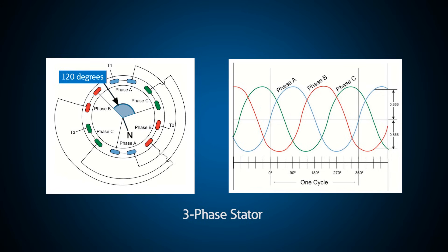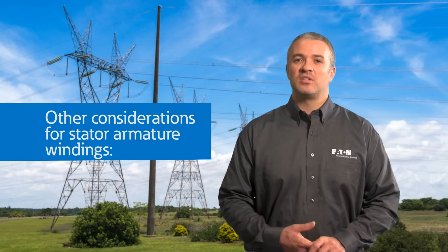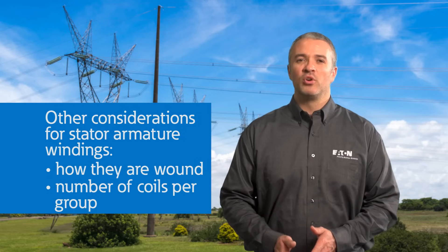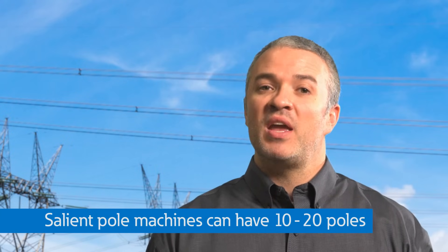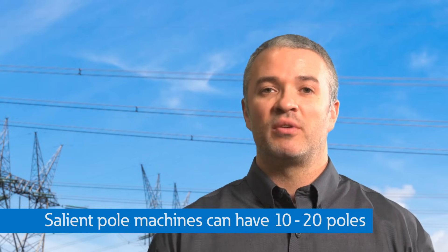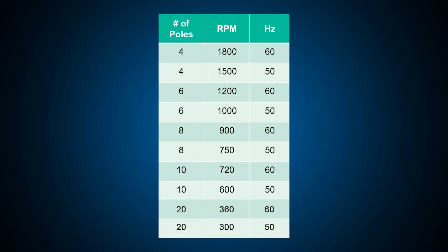As the rotor spins, three separate voltages are created at the stator terminals. The frequency of a generator is directly related to the number of poles on the rotor and the speed at which it spins. For example, for a four-pole rotor to rotate at 60 Hertz, it would have to spin five times faster than a 20-pole rotor, putting much more mechanical stress on the generator. Salient pole machines may have 10 to 20 poles, reducing the stress but running at a lower RPM. Power plants may choose a rotor with a certain number of poles depending on the speed needed for the application.